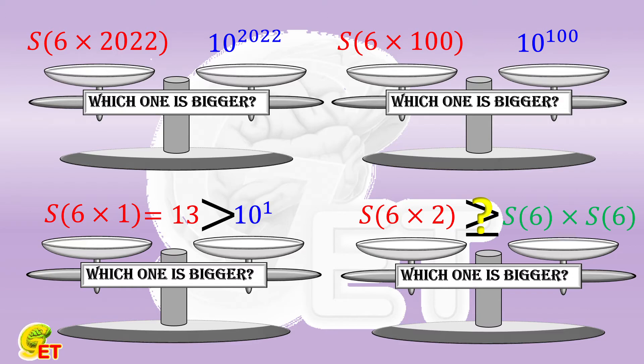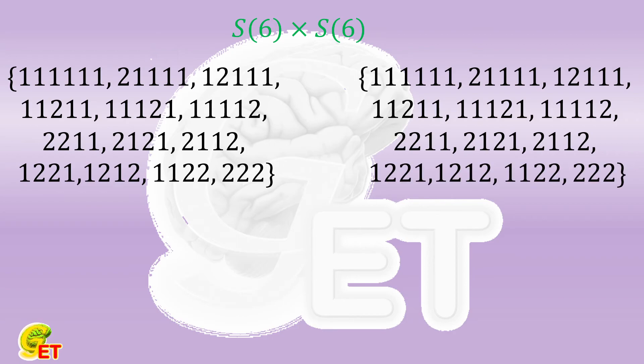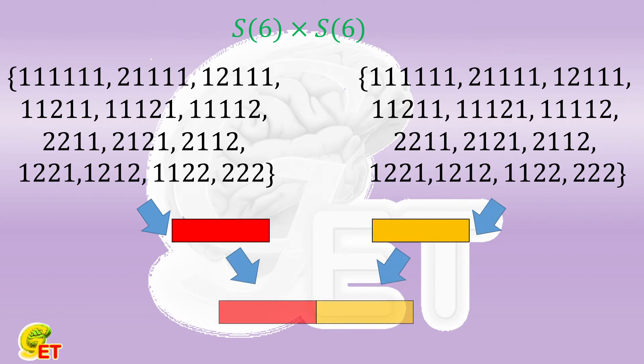What does S of 6 times S of 6 mean? It means that there are two sets, each of which consists of those numbers with digit sum being 6. We may randomly select one from the first set and one from the second set, and connect them in order to form a new number. S of 6 times S of 6 exactly describes the number of possibilities of such new numbers.